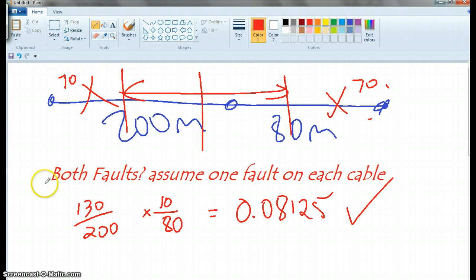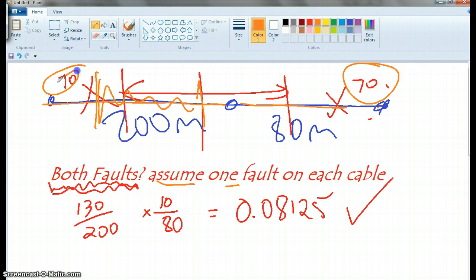Okay, we've got it wrong. So we're looking at the fact that it says both faults. No idea what that means. We just assumed that one fault on each cable. So one fault here and the other fault here. So on this side, we looked at the fact that it was 130 metres out of the 200 metres. And on the other end, 10 metres out of the 80 metres, because it's 70 each side.